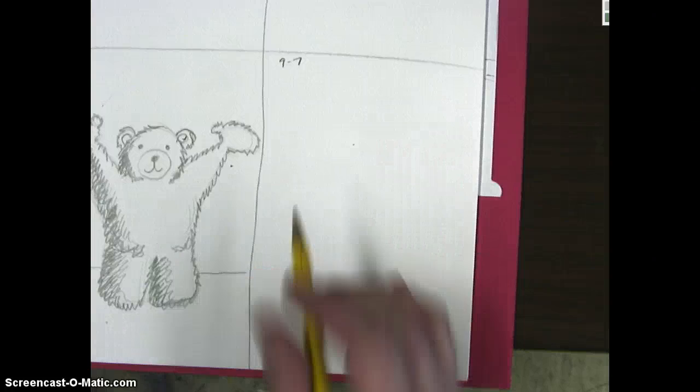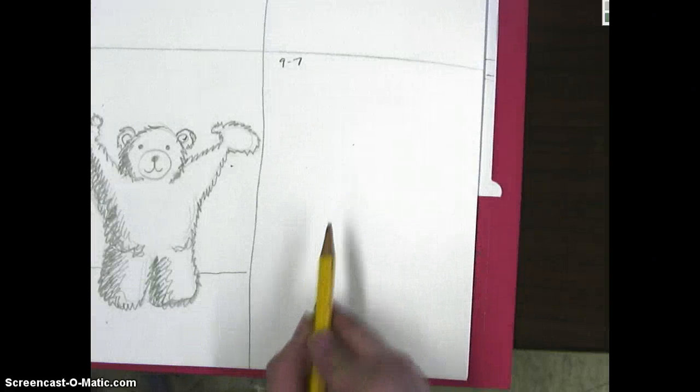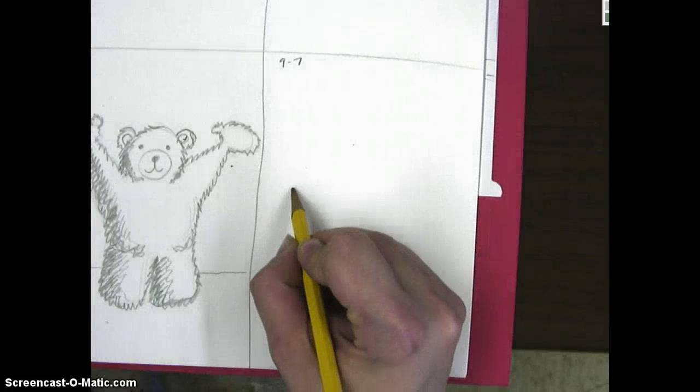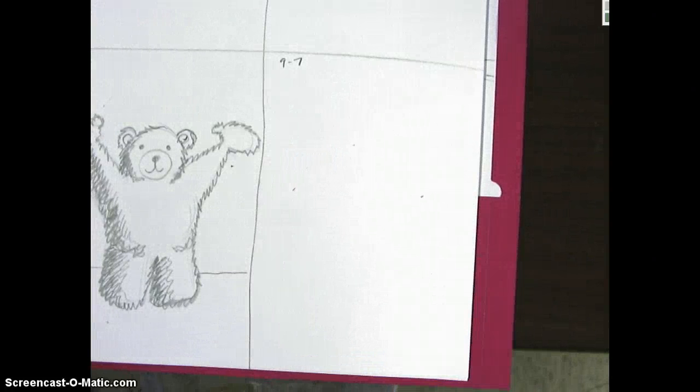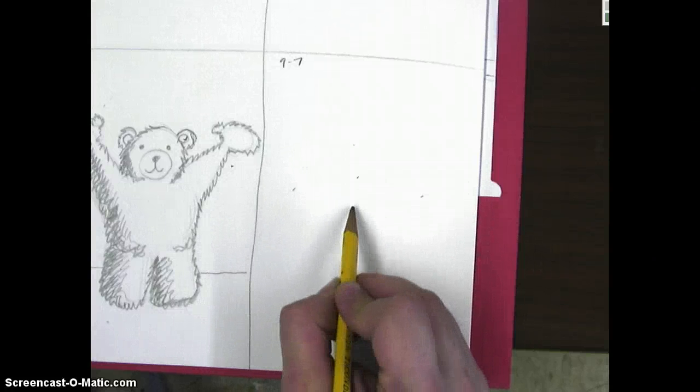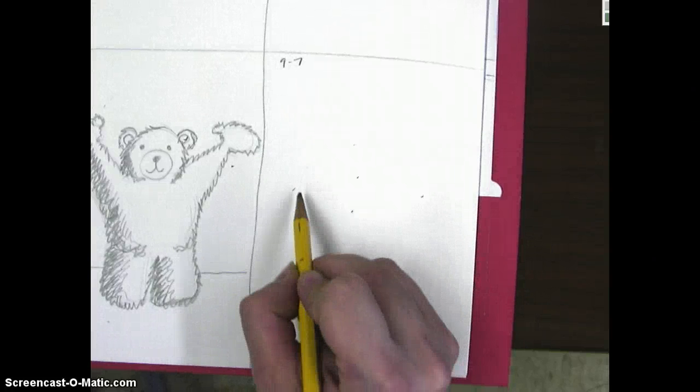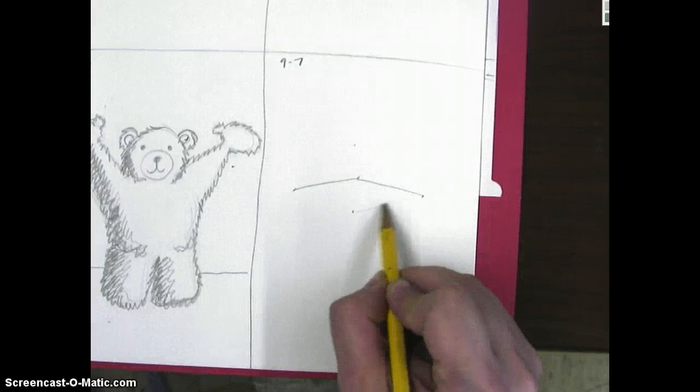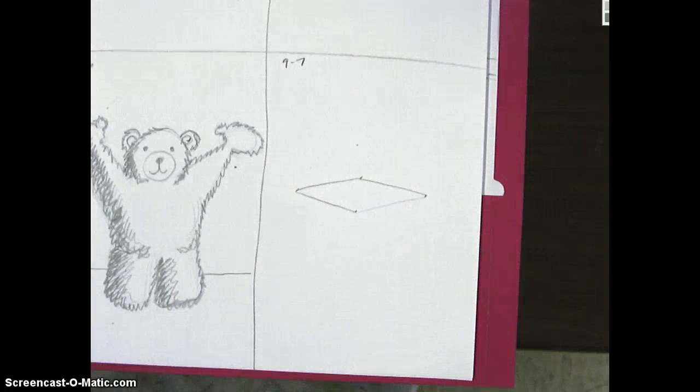So what we're going to start with for this is we're going to start right around the middle of your space with a foreshortened square. How you do that, if you don't remember, is to do two dots, one on each side, find the middle, you're going to go above slightly and below slightly, not too far up, not too far down. Connect those dots until you have what looks like a squashed diamond. This is going to be the base of your chair.